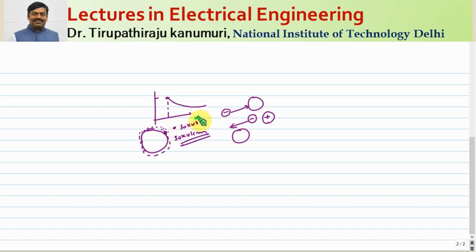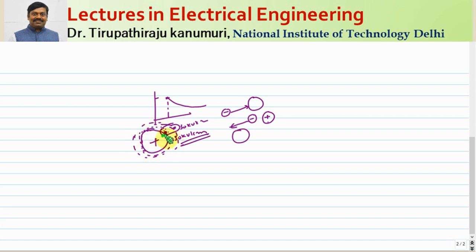At the point where the field equals 30 kV per centimeter, the region between the conductor surface and that point gets ionized and starts acting as a conductor. The ionized particles accumulate on the surface of the conductor and contribute to conduction, becoming visible in the form of light. The color of this light depends on the polarity of the conductor — for the positive conductor, electrons form and the color will be different from that of the negative conductor.